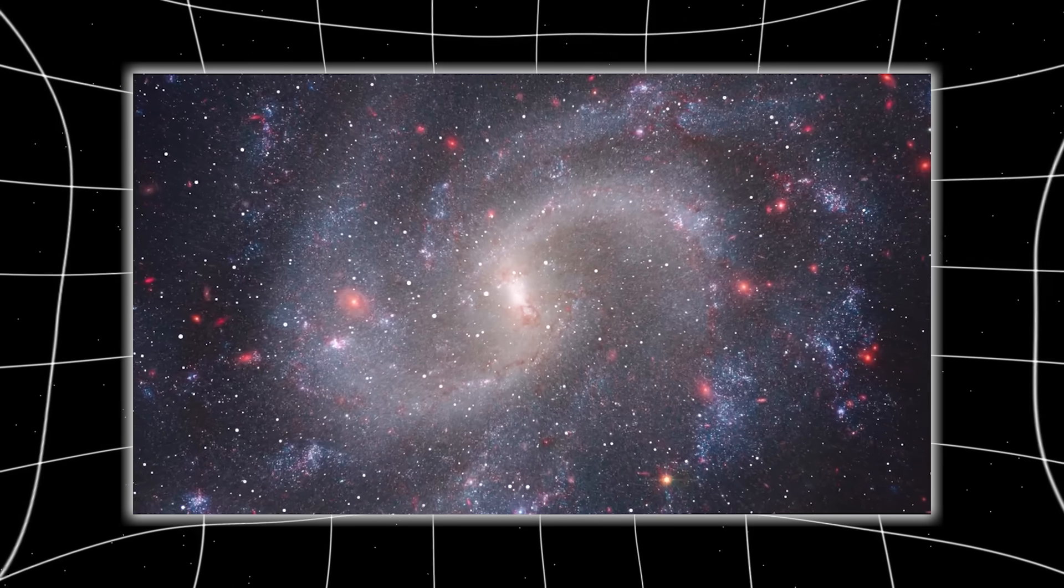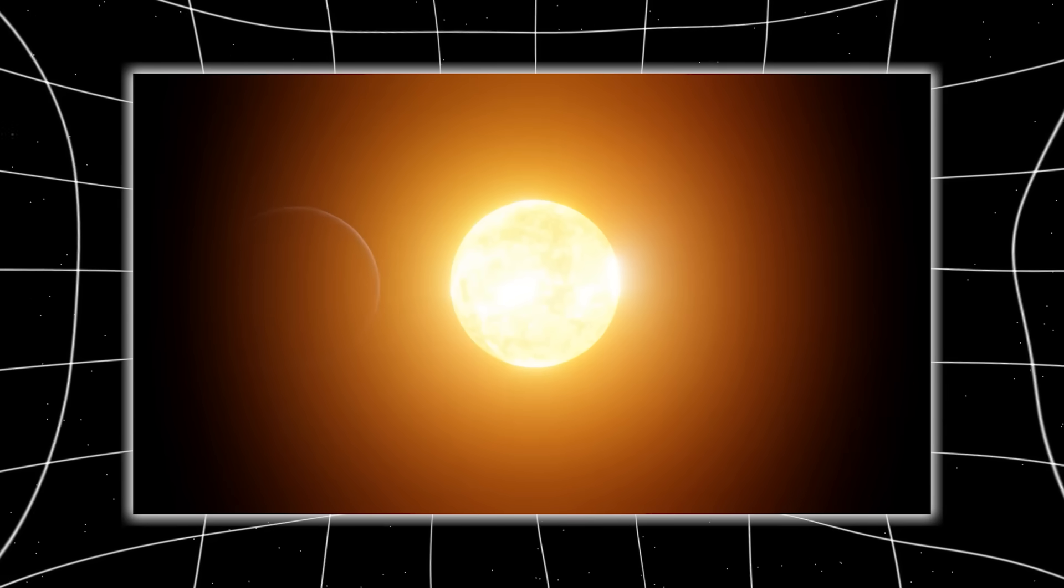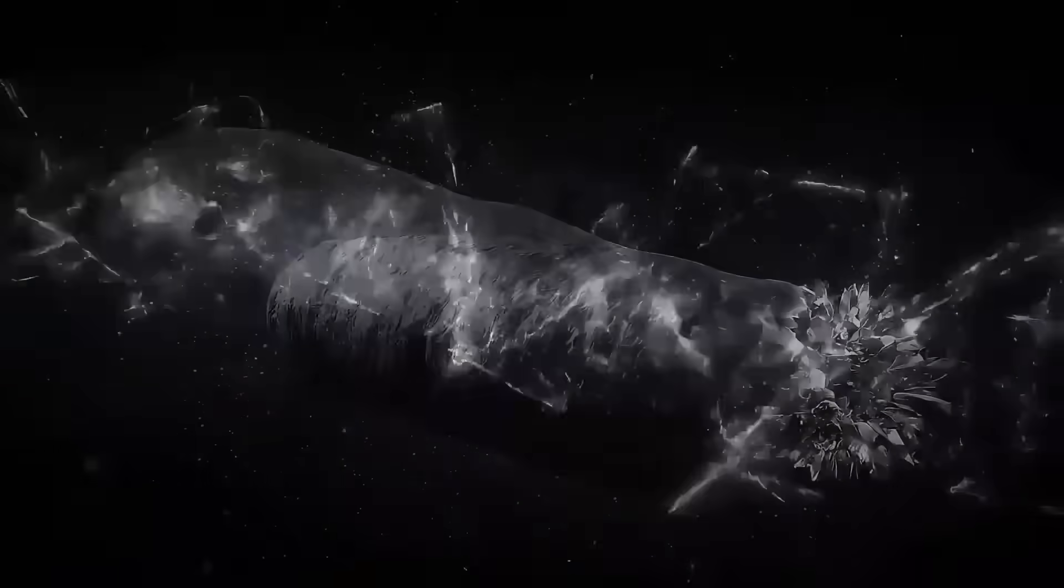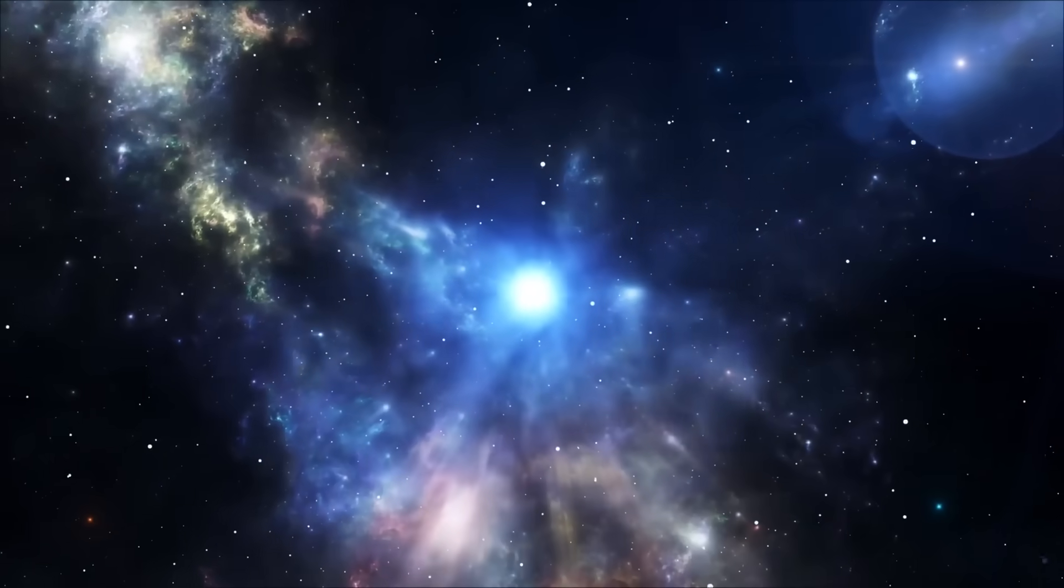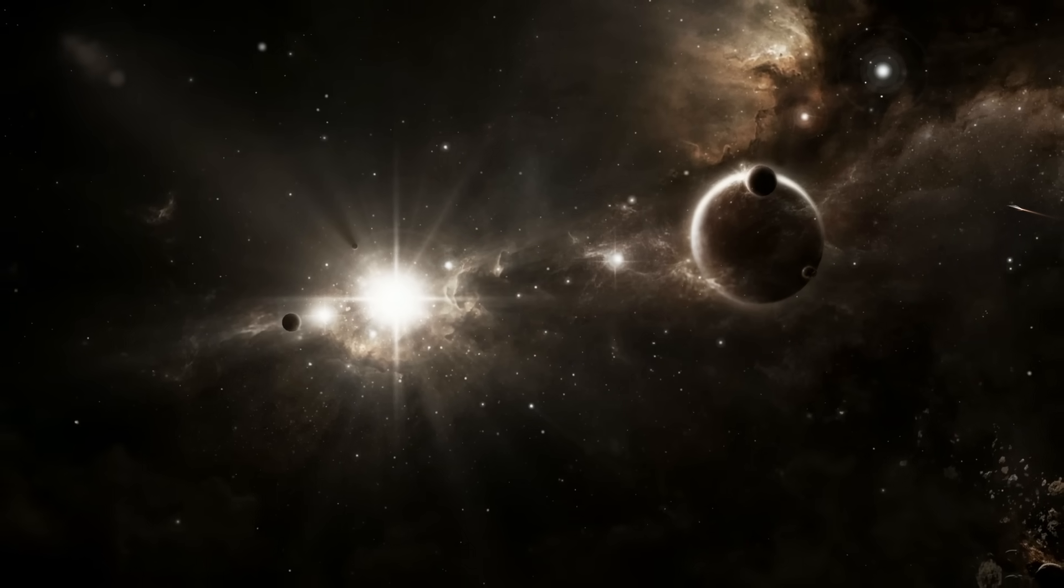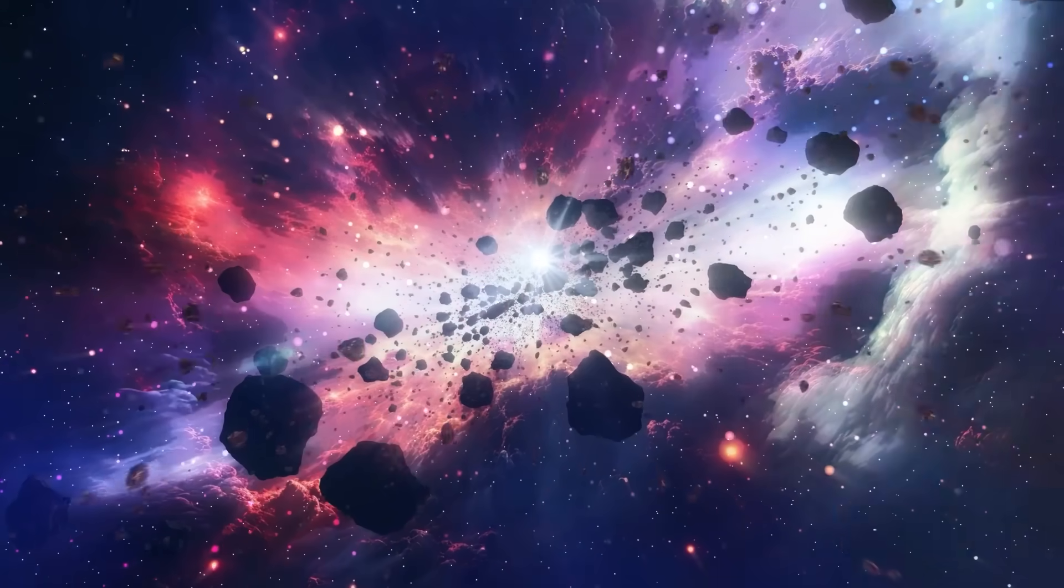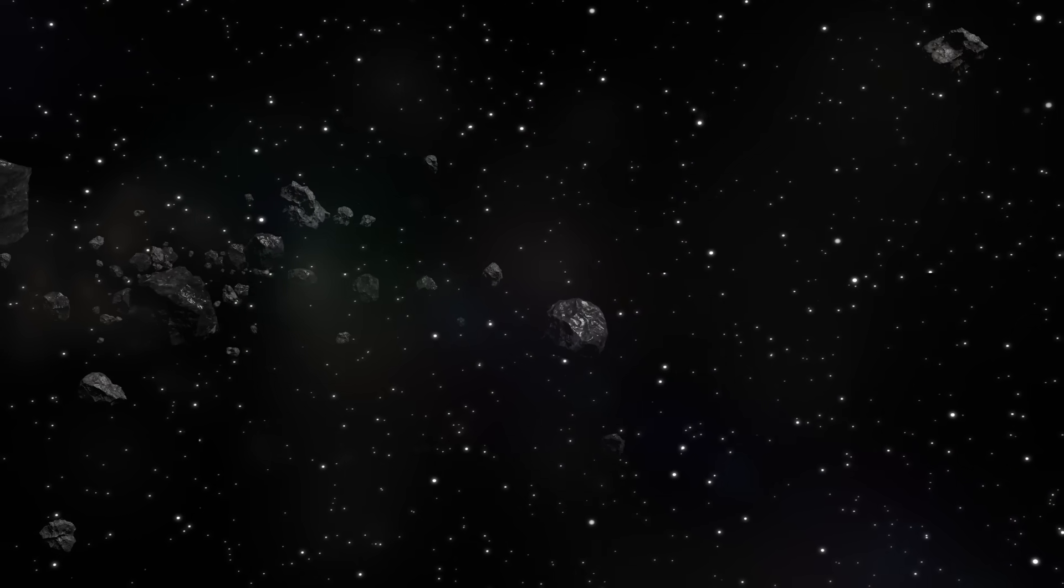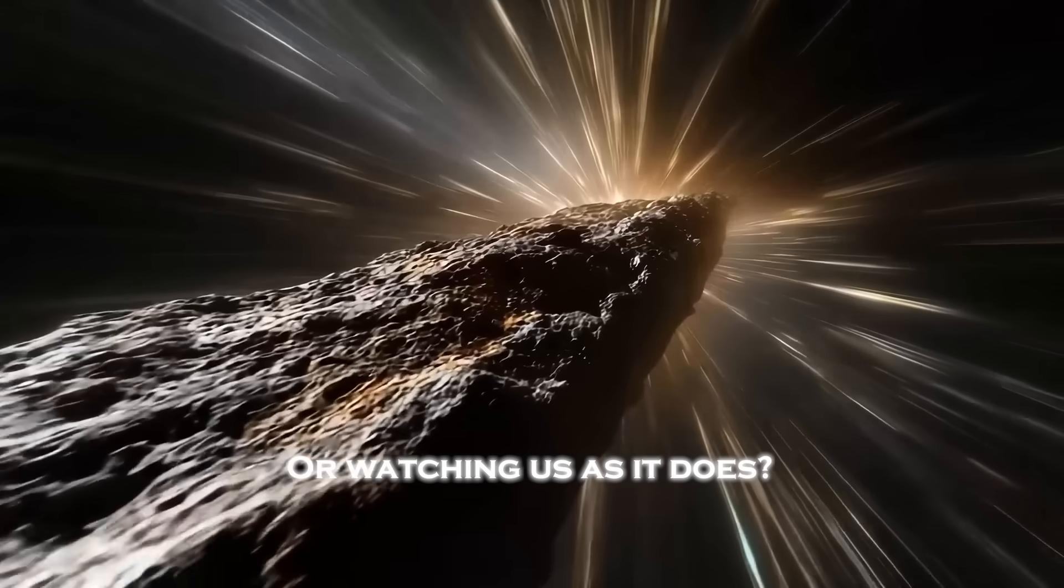The most terrifying part is not what we see, but what we don't. Because whatever Atlas is, whatever is driving its acceleration, whatever makes it glow blue and drift sideways against gravitational laws, it has not revealed itself yet. It remains silent, drifting with unsettling purpose through the void. And until the moment of truth arrives, we are left with one question. Is 3i Atlas simply passing through our solar system, or watching us as it does?